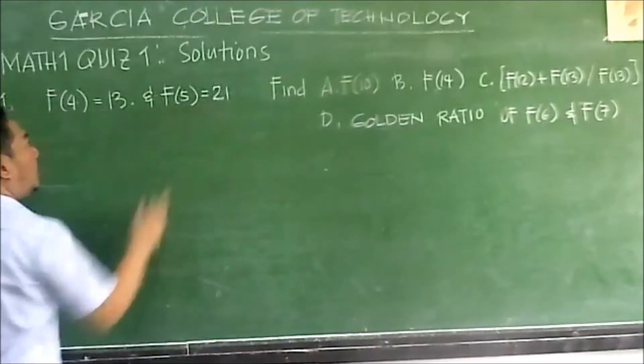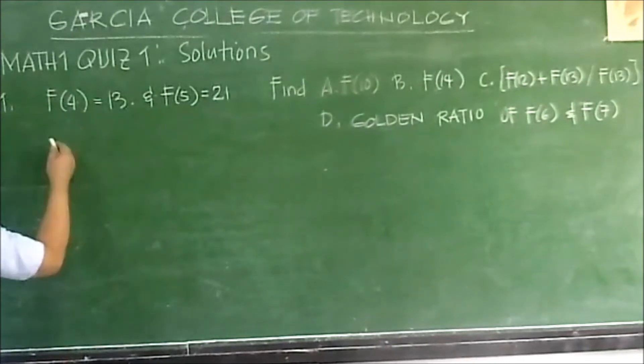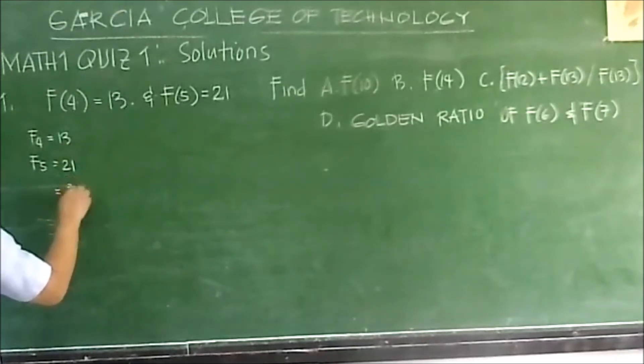F4 equals 13. F5 equals 21. F5 plus 21, that will be 34. Therefore this is F sub 6.